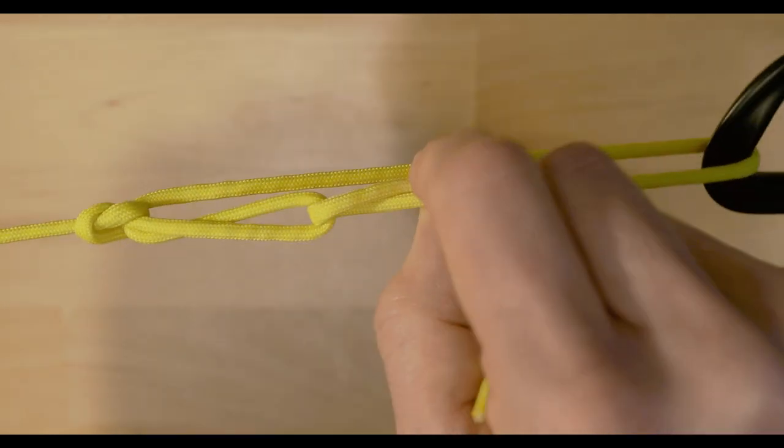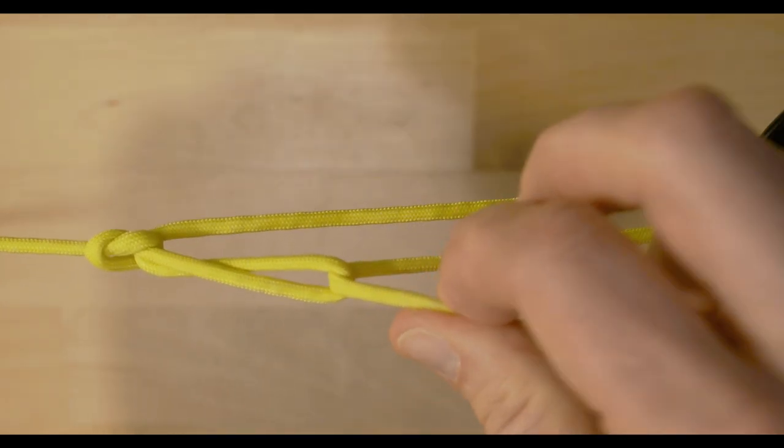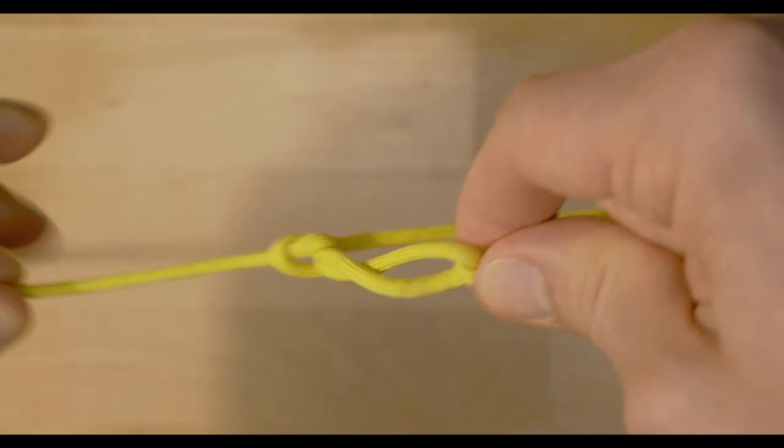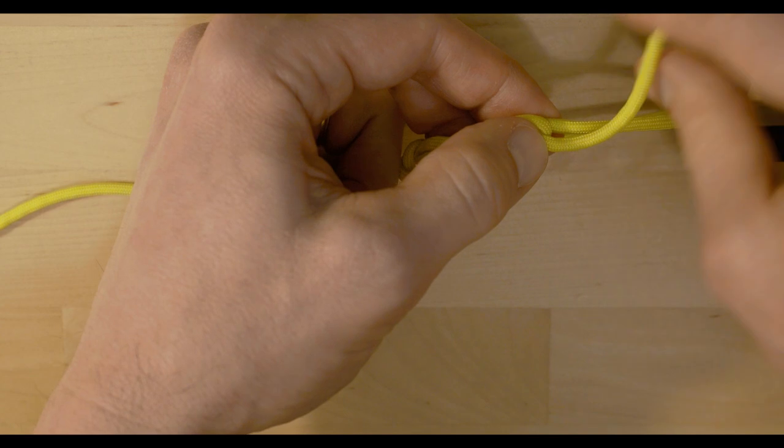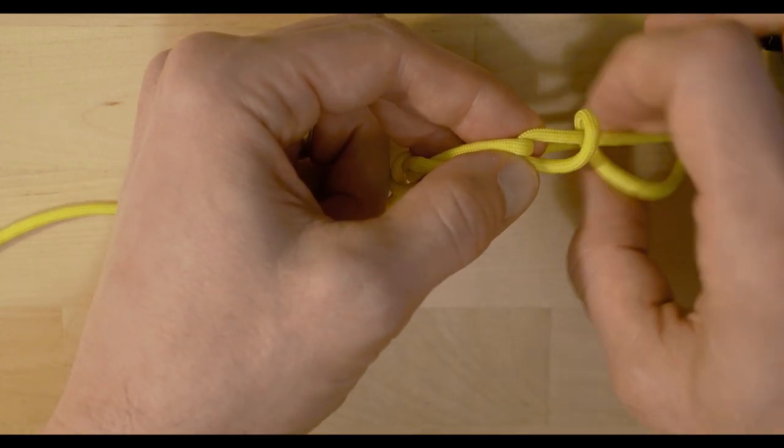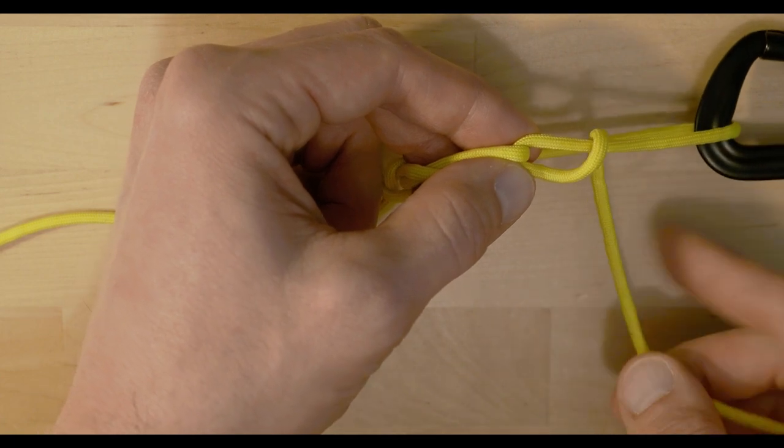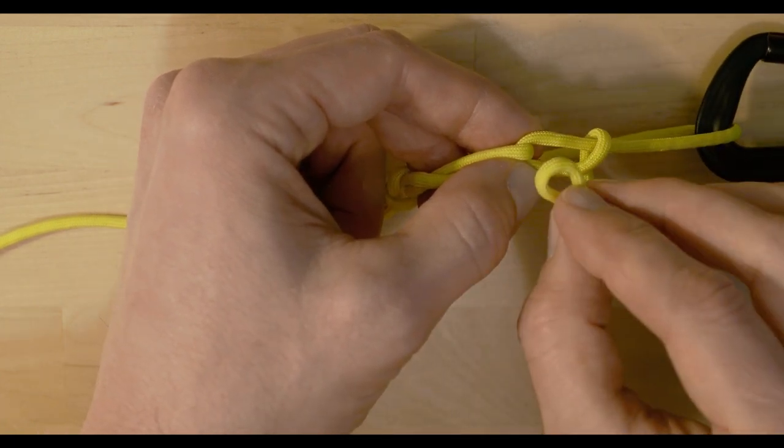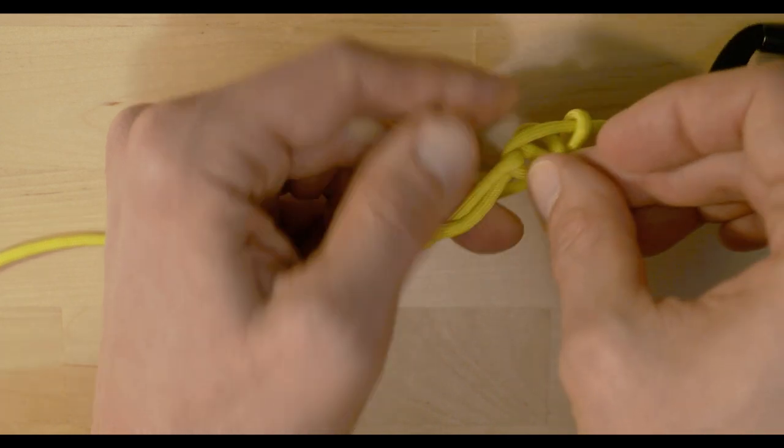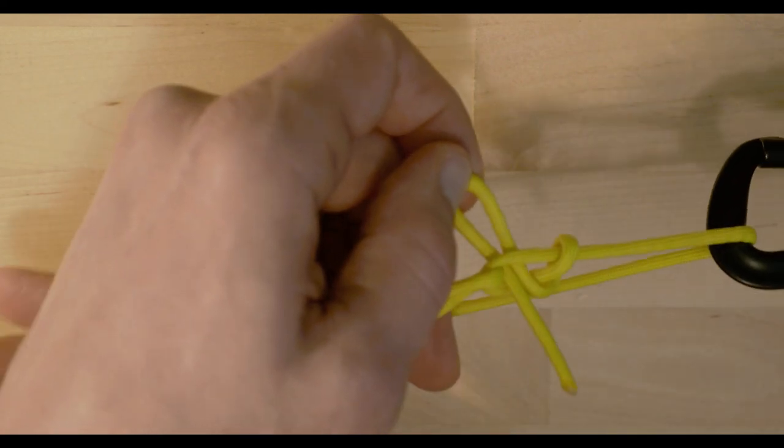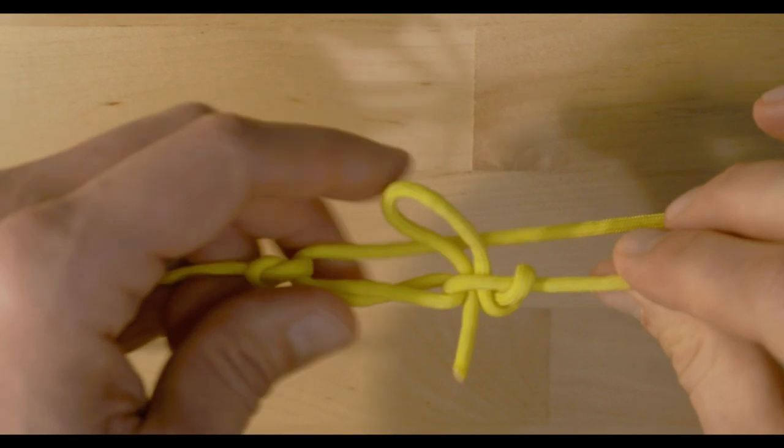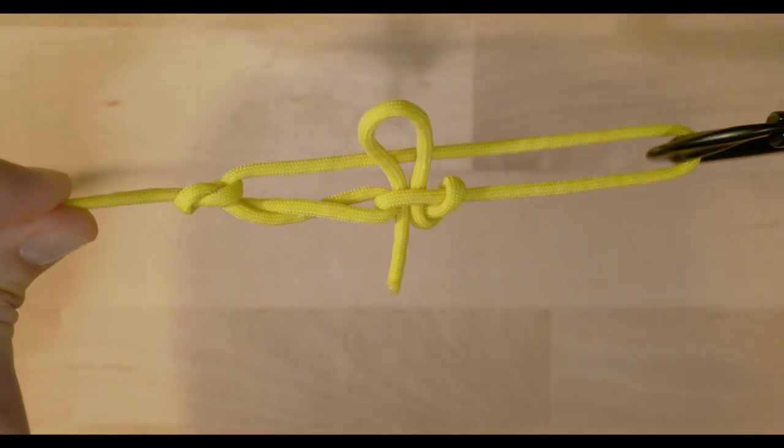So, if I need to re-tension that line, I can re-tension it and just secure it again really quickly by just going around, right there, make my bite, and pass it through, and tighten it up. And that's secure. That's my trucker's hitch.